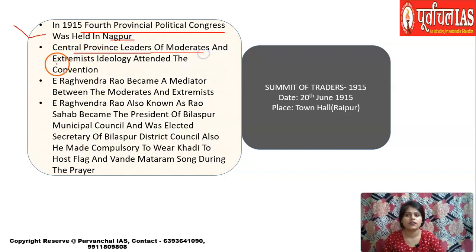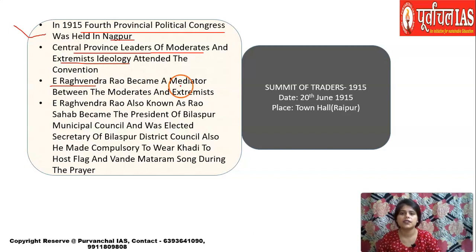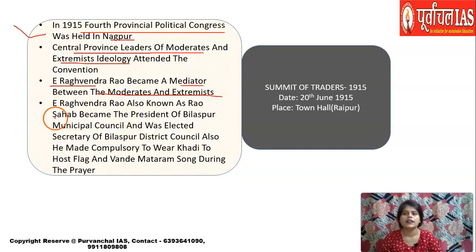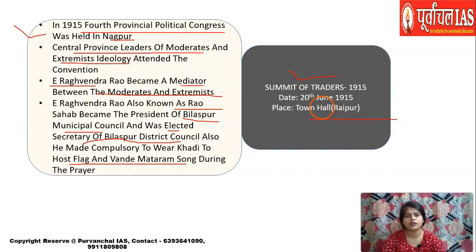In 1915, the fourth provincial political Congress convention was held at Nagpur, attended by leaders of both moderate and extremist ideology. After the 1907 split, in 1915 they came together. Barrister E. Ragvendra Rao, popularly known as Rao Sahib, served as mediator between the two groups. He became president of Bilaspur Municipal Council and secretary of Bilaspur District Council, made khadi compulsory, and hosted the flag and Vande Mataram during prayers. A summit of traders also took place at Town Hall, Raipur, on 20th June 1915.